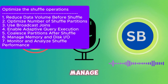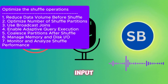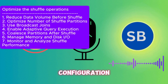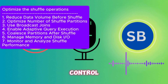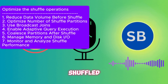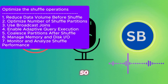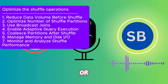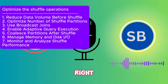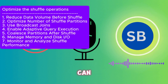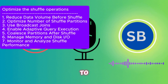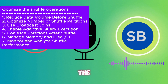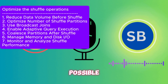We can also manage memory and disk I/O for shuffle files — there are configurations to control each shuffle file size which can be optimized. By monitoring and analyzing shuffle performance over time, you identify the right numbers to reduce shuffle data as much as possible and improve overall job performance.